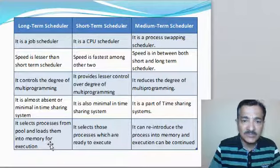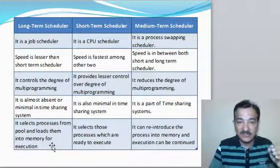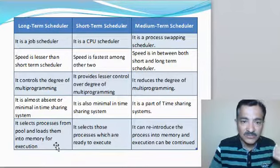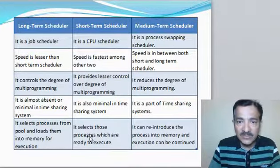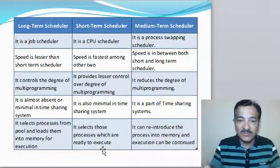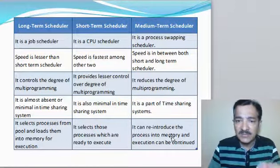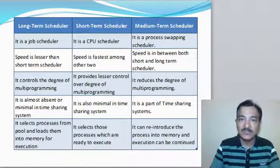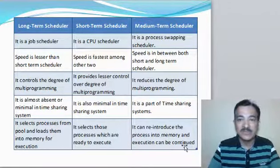The long term scheduler selects processes from the pool and loads them into memory — from the process creation pool into the ready or ready suspended queue. The short term scheduler selects processes that are ready to execute and gives them to the CPU. The medium term scheduler can reintroduce the process into memory so execution can be continued — for example, when a blocked process waiting for IO has finished its IO, it can be swapped back into main memory by the medium term scheduler.